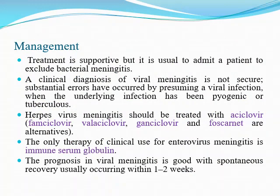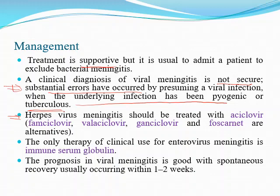Management is mainly supportive, but it is usual to admit the patient to exclude bacterial meningitis — this is the important point. A clinical diagnosis of viral meningitis is not secure, as substantial errors have occurred by presuming viral infection when the underlying infection was pyogenic or tuberculosis. If the cause is herpes virus, we can give acyclovir or related agents like famciclovir, valacyclovir, or ganciclovir. The only therapy of clinical use in enterovirus meningitis is immune serum globulin. Usually the patient recovers completely within one to two weeks.